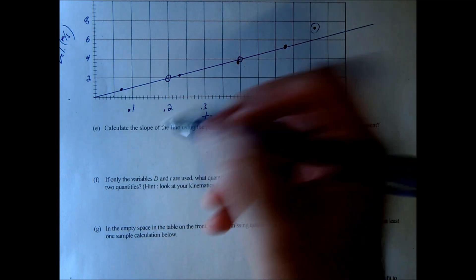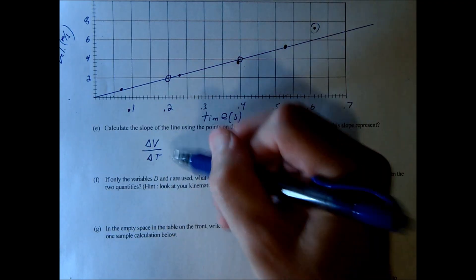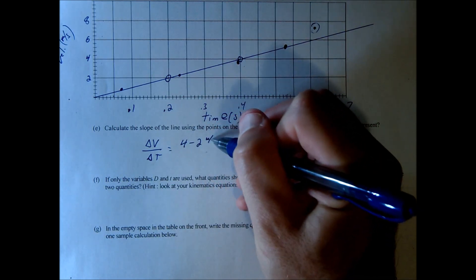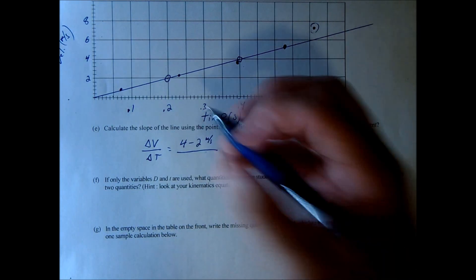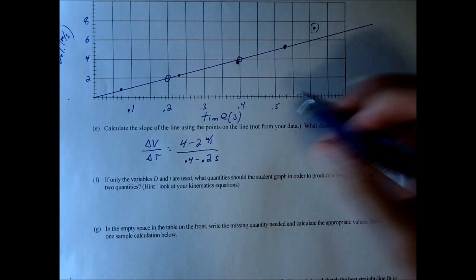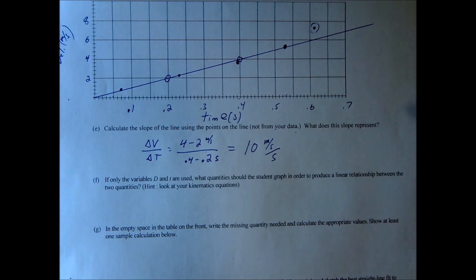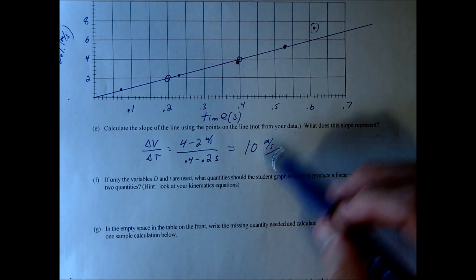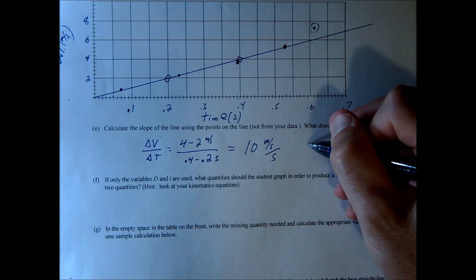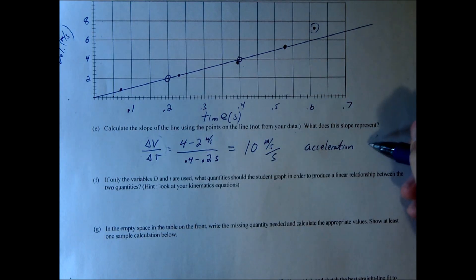We're finding slope as delta V over delta T — rise over run. The rise here is 4 minus 2 meters per second, and the run is 0.4 minus 0.2 seconds. That gives you 10 meters per second per second. The slope represents acceleration — specifically, because we had a marble accelerating downward, this is the acceleration due to gravity.